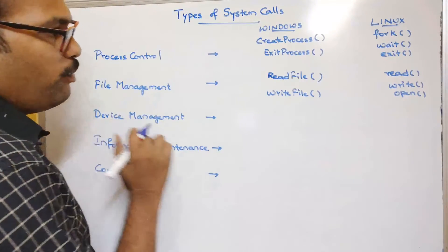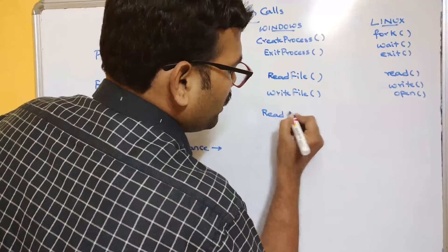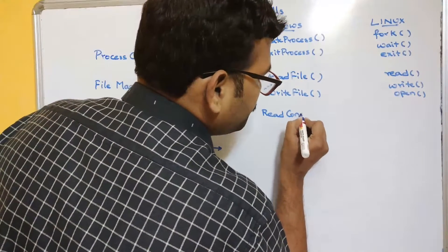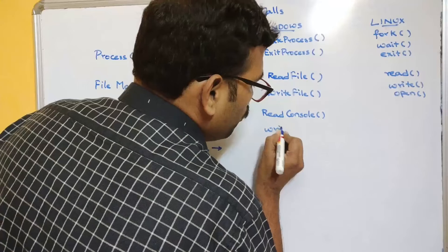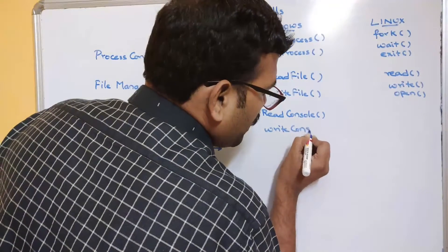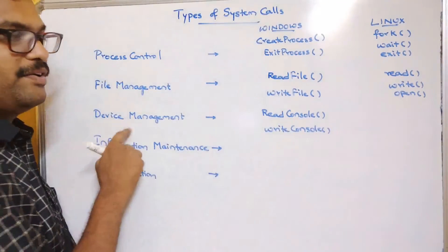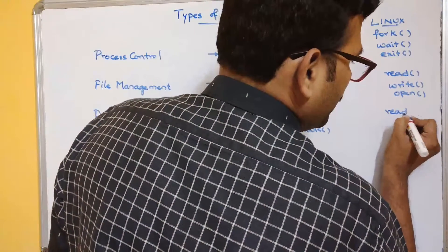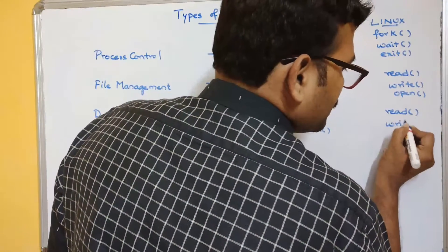Coming to device management — which deals with buffers: in Windows we use read console and write console. These are a few system calls for device management. In Linux, we again simply use read and write.